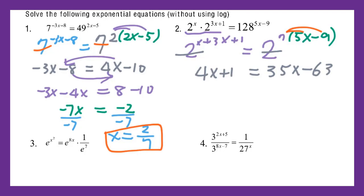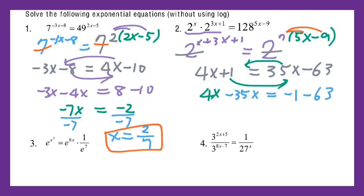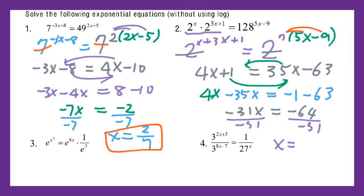Put all variables on one side because this is a linear function. I move 35x to the left side and positive 1 to the other side. I got negative 31x equal to negative 64. Then divide both sides by negative 31: x will be 64 over 31. That's the answer for number 2.